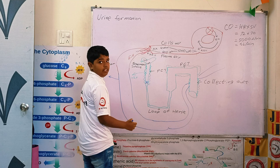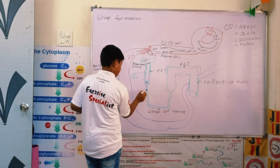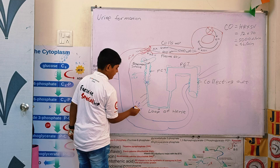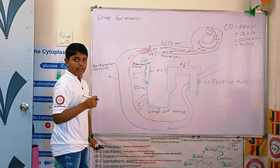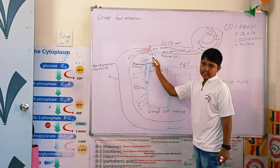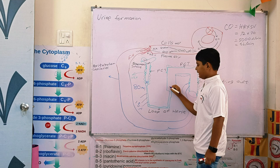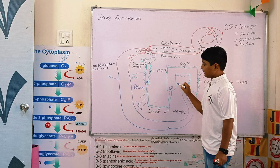After PCT returns 65%, how much remains? 35 ml remains. Now in the loop of Henle, it gives out 15%, meaning 15 ml. So total, 80% or 80 ml is returned back. So firstly it was 100 ml, then 35 ml after PCT, and after the loop of Henle, it is only 20% or 20 ml remaining.